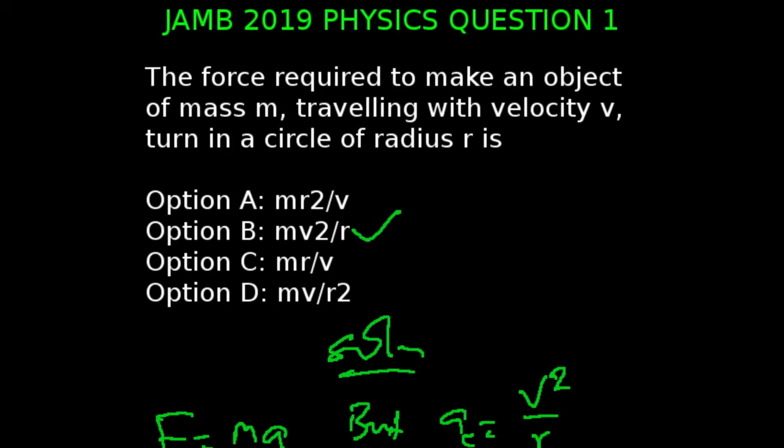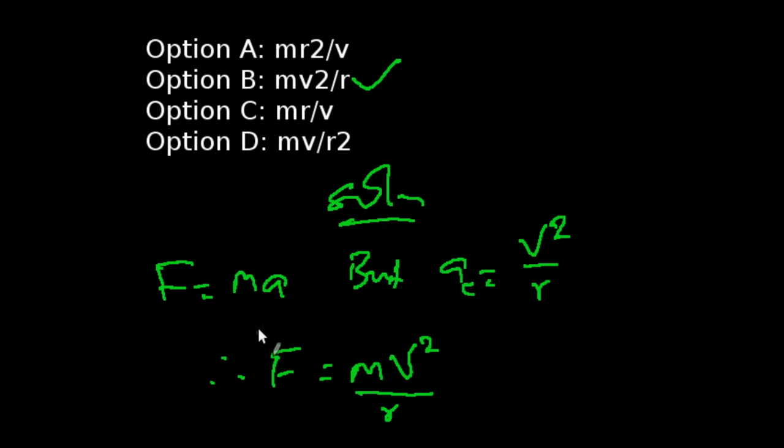We are looking at question one of the JAM 2019 physics exams. The force required to make an object of mass m traveling with velocity v turn in a circle of radius r. Force is the product of mass times acceleration, and acceleration for any object undergoing circular motion is given by v squared over r. So when we put v squared over r for a in this formula, we're going to have F equals m v squared over r. That gives us option B as our correct answer.